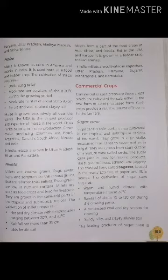Then comes our next heading, that is millets. Millets are coarse grains — ragi, jowar, bajra and sorghum are the various grains referred to as millets. Millets are used as food crops and feed for livestock. They are grown in the semi-arid parts of the tropical and subtropical regions. The cultivation of millets requires the following.